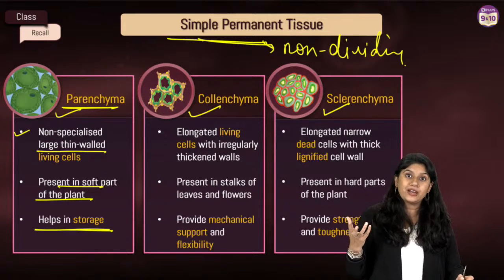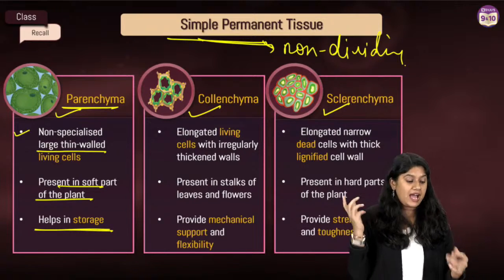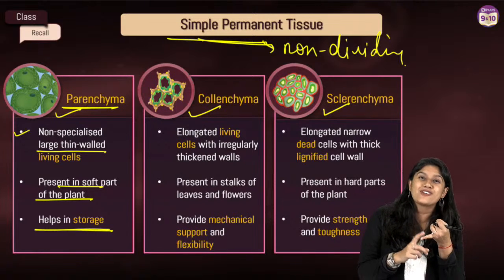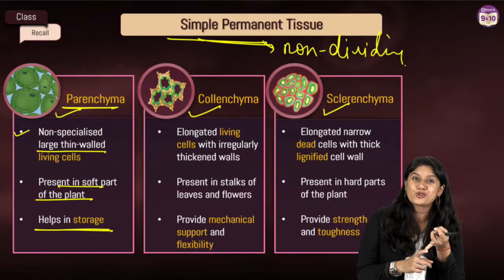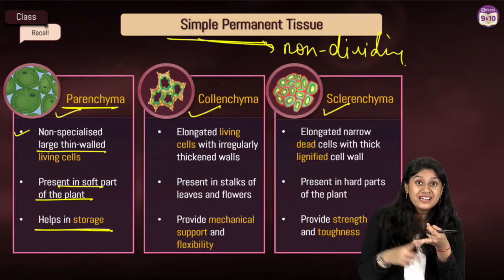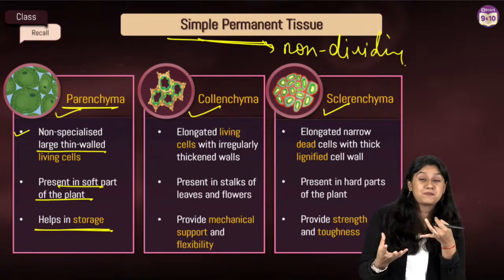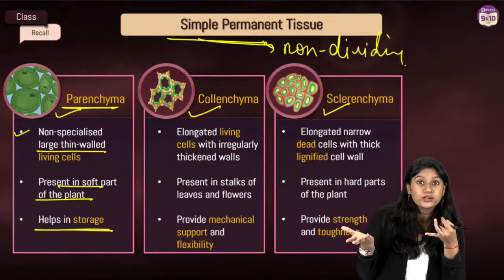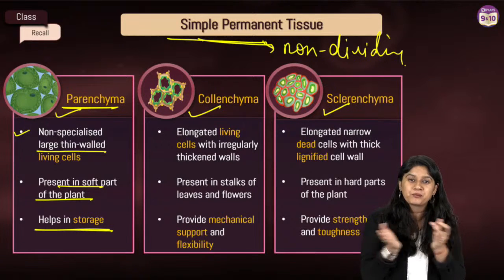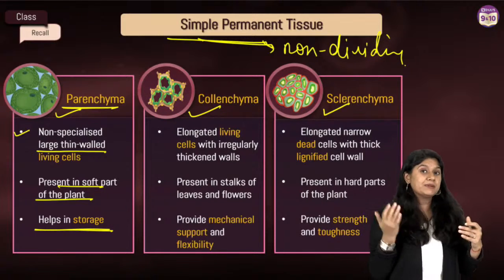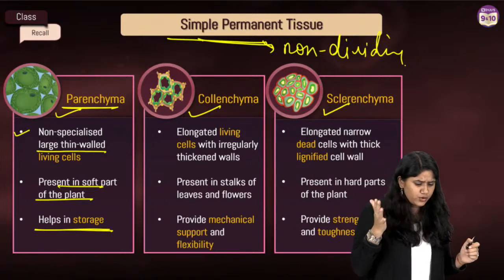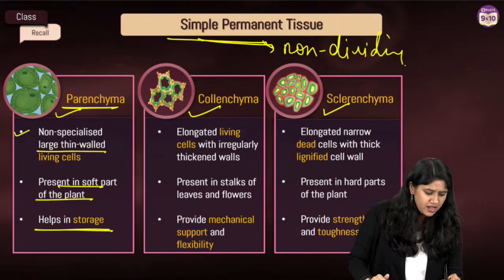We have two types of parenchyma. Chlorenchyma plays a very important role in photosynthesis, and aerenchyma actually helps water plants to float.